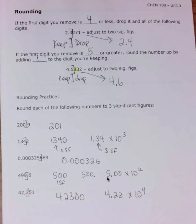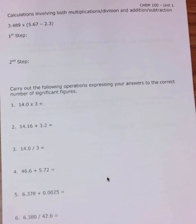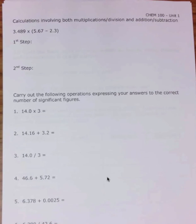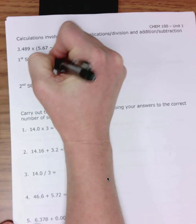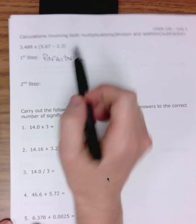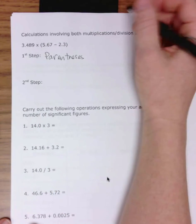Keep these rules in mind for rounding. We're going to be doing conversion problems that have a lot of steps, and at the very end you have to think about significant figures as well as rounding. On the next page we have some practice problems covering calculations involving both multiplication/division and addition/subtraction. The first step with these multi-step problems is to do parentheses — remember the order of operations. With these types of problems, you have two steps and we're going to round at the very end, carrying additional digits through.